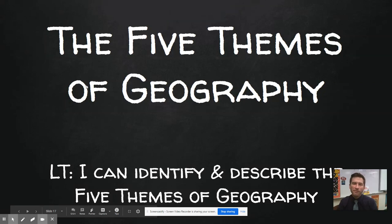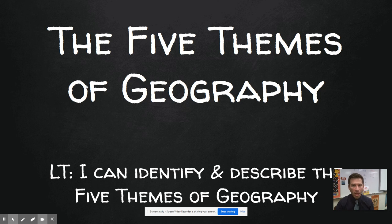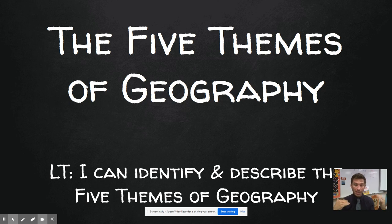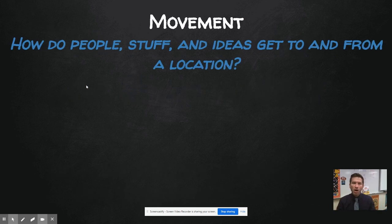Hey, gang. Welcome to part two of your five themes of geography video lecture. In part one, we took a look at location, talking about absolute and relative location. We took a look at place, talking about physical or natural characteristics and human characteristics. And then we talked about region, how we can chunk the world based on common characteristics. This video is going to cover our final two of the five themes. So let's dive in.